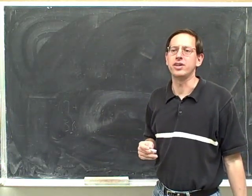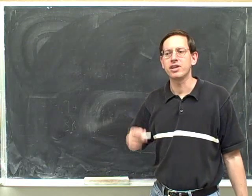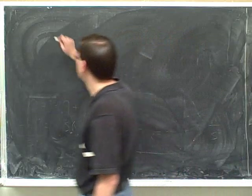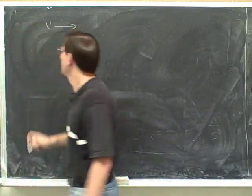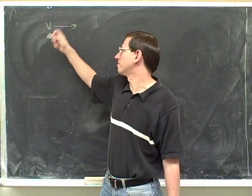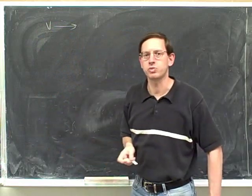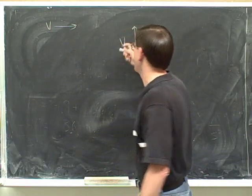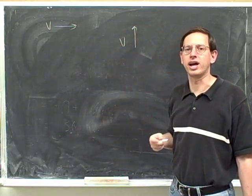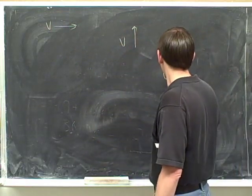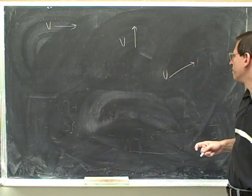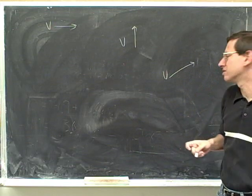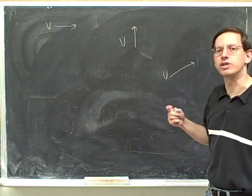What does the velocity tell you? One important thing the velocity tells you is which way you're going — the velocity tells you which way you're moving. So let's say this arrow or vector represents the velocity. Which way are we going? We're going to the right. Which way are we going now? We're going up. Which way are we going now? Maybe it's best to say we're going northeast — this is pointing in the northeast direction. So the velocity tells you which way you're going.